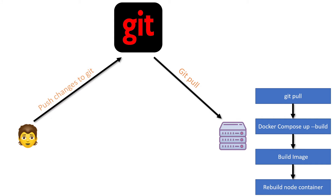There are a couple of different issues with this development to production workflow. The main issue is that we're building our image on our production server. This is something that is never recommended — you should never be building your image on your production server, because building an image takes resources, it takes CPU cycles, and it takes memory. For our application it's a tiny demo, so it doesn't take that much CPU horsepower to actually build that image.